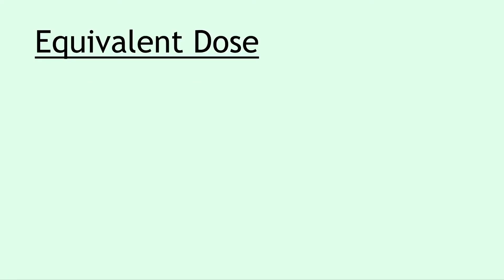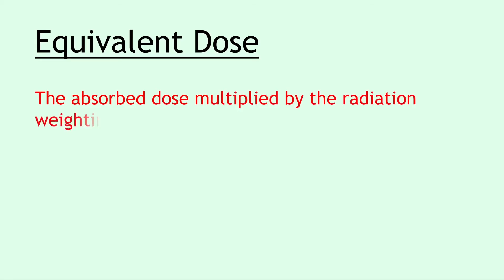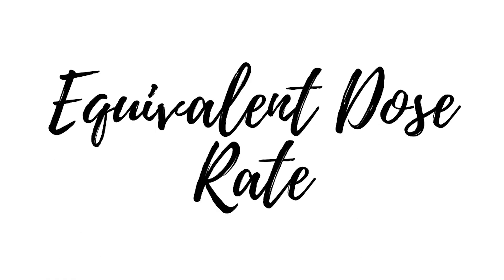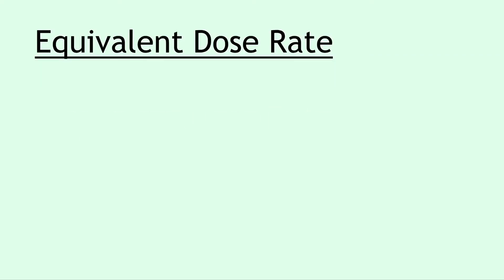Moving on we have equivalent dose. Equivalent dose is defined as the absorbed dose multiplied by the radiation weighting factor, and this just comes from the equation for equivalent dose. Next we have the equivalent dose rate, and this is defined as the equivalent dose per unit time, or the equivalent dose each second.